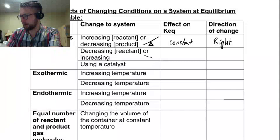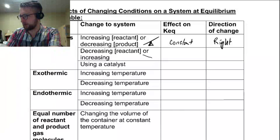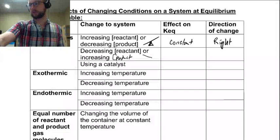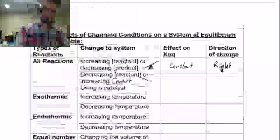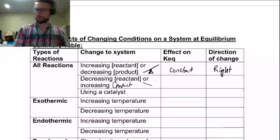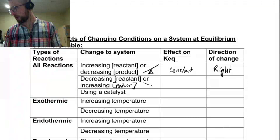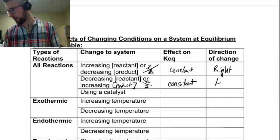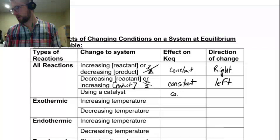If you decrease the reactant or increase the product, then you have a tilt the other way — so you need to move some material backwards, and the shift is now to the left. The equilibrium constant is still constant. Using a catalyst, we still get a constant Keq and no change in concentrations. That applies to all reactions.